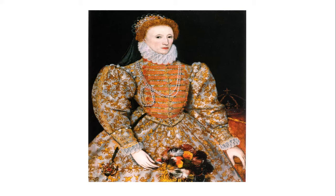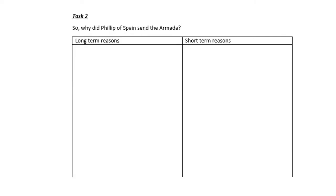If you look at your lesson notes booklet, you should see on page 3 a table. You are going to use this table to collect information about the long-term and short-term reasons why Philip of Spain decided to send the Armada.